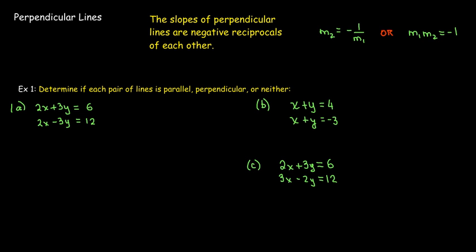So, let's look at some pairs of lines, and let's see if we can determine if they are parallel to each other, perpendicular to each other, or neither. And it's really just going to come down to looking at the slopes. If the slopes are the same, they're parallel to each other. If the slopes are negative reciprocals of each other, or if their product equals negative 1, they're perpendicular, and if neither of those things are true, then they're neither parallel nor perpendicular.